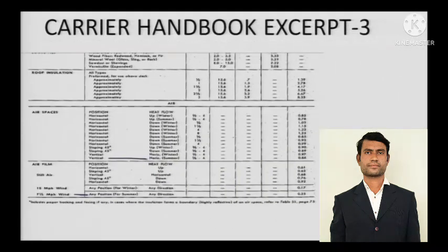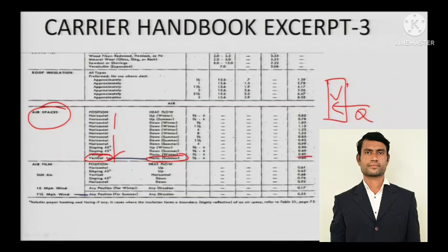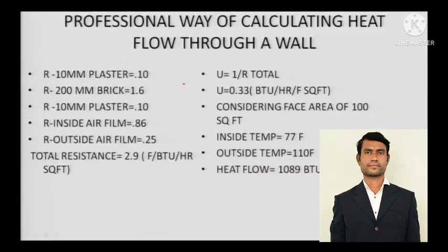This Carrier Handbook excerpt covers the inside and outside air. You can see the air spaces here — the wall position is vertical and the heat flow is horizontal. For air, the thickness does not matter because if it is an open area or larger space, thickness is not a factor. This gives us the resistance values for inside air and outside air.